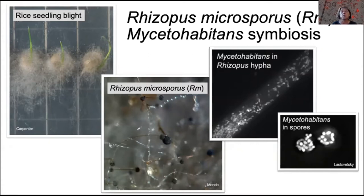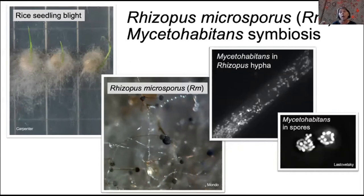This system lends itself to in-depth studies because, unlike most of the symbiotic associations of fungi with bacteria, it is easy to manipulate. Fungi can be cured of bacteria. Bacteria can be cultivated independently and put back into fungi. And both fungi and bacteria can be transformed genetically.